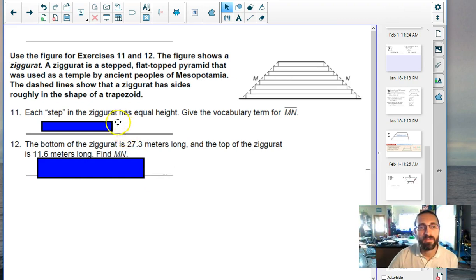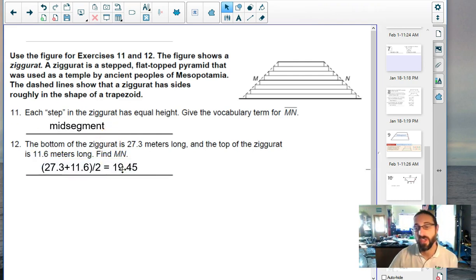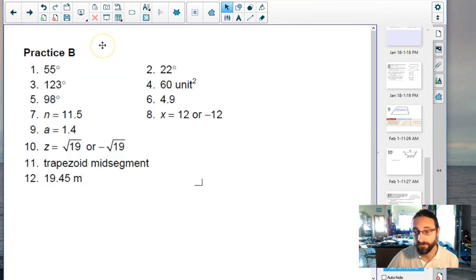Last problem. It's talking about a ziggurat, and it's a temple, a pyramid. And it says each step is equal height. Give the vocabulary term. Well, if you count these up, one, two, three, four. One, two, three, four. Oh, MN is a mid-segment. And then, again, if you want to find the length of that mid-segment, you just average the top and the bottom. Hey, here are the answers if you've tried any of those other problems on your own. Otherwise, your assignment is posted in Canvas. Have a great week or whenever I'm going to see you next, and do your best.